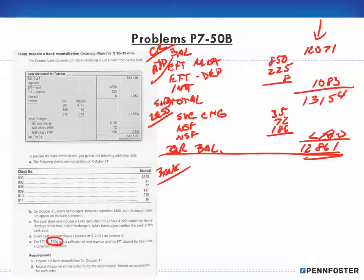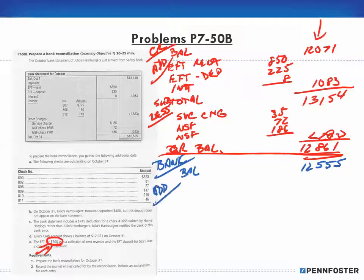Now let's work on the bank statement. Remember this here we're going to treat that as an error. For my bank statement I have a beginning balance of $12,555. These are outstanding checks, so that's a deduction. We're looking for additions. It says on October 31st deposit $400 but the deposit doesn't appear on the bank statement, so we have a 1031 deposit for $400. That takes care of that.